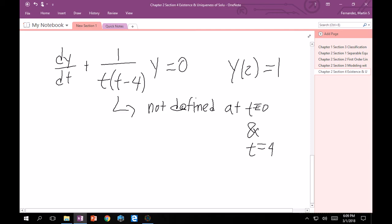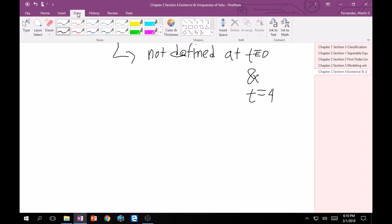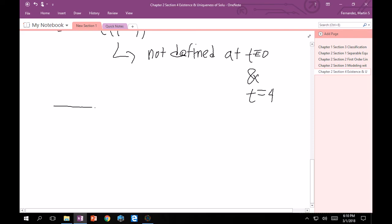Now, that's important because then the only possible open intervals that we have, if we look at it graphically, right? If we just look at the t axis, if it goes from infinity to minus infinity, right? I'm telling you at 0, which is here, maybe, and 4, which is here, they're not defined, right?